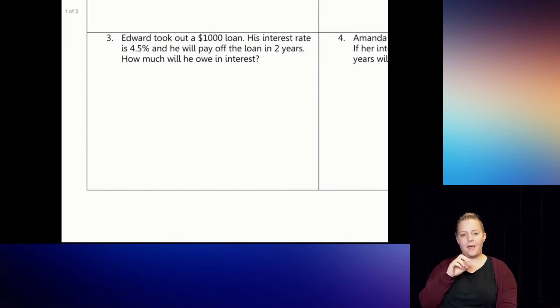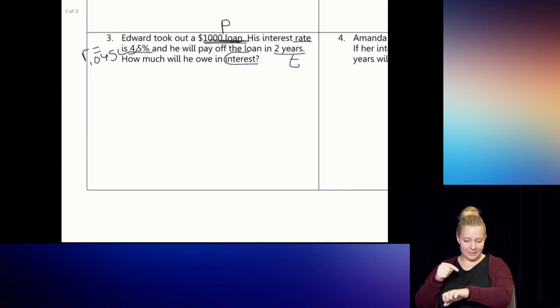Number three says, Edward took out a $1,000 loan. His interest rate is 4.5%, and he will pay off the loan in two years. How much will he owe in interest? Well, let's see. He took out a $1,000 loan, which means that's the principal. That's the amount that he's starting with. His interest rate is 4.5%. Since it's percent, I know its rate. So I'm going to give myself a reminder that for the R, I'm going to do 0.045, because I had to move that decimal two spaces to the left to get it from percent form to decimal form. And he will pay off the loan in two years. Since we're talking about years, I know that that's my time. How much will he owe in interest? Which means the I is the part we don't know yet.